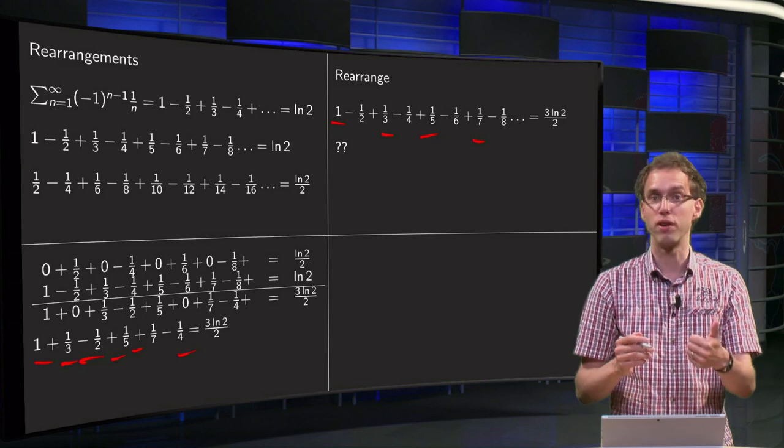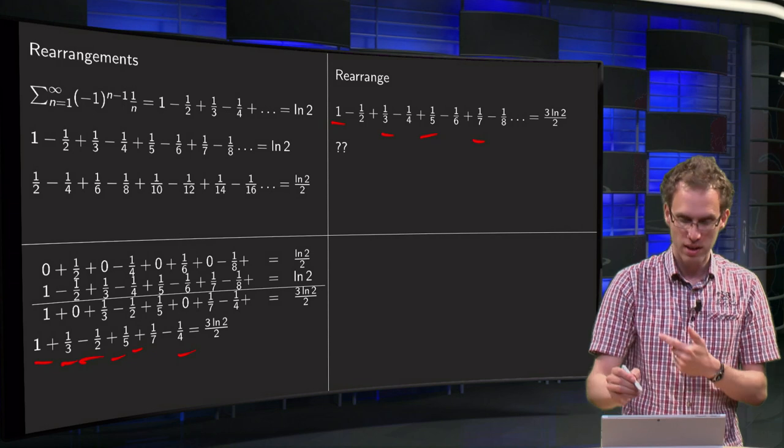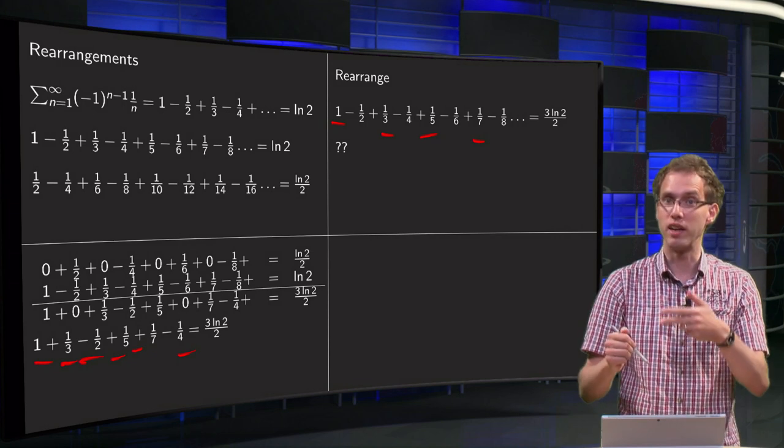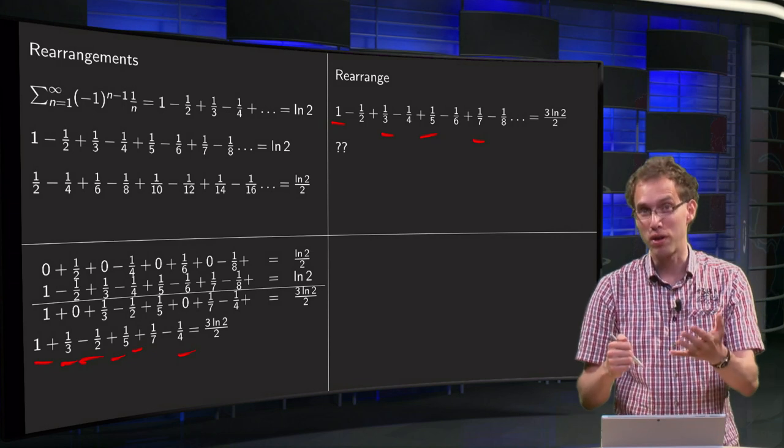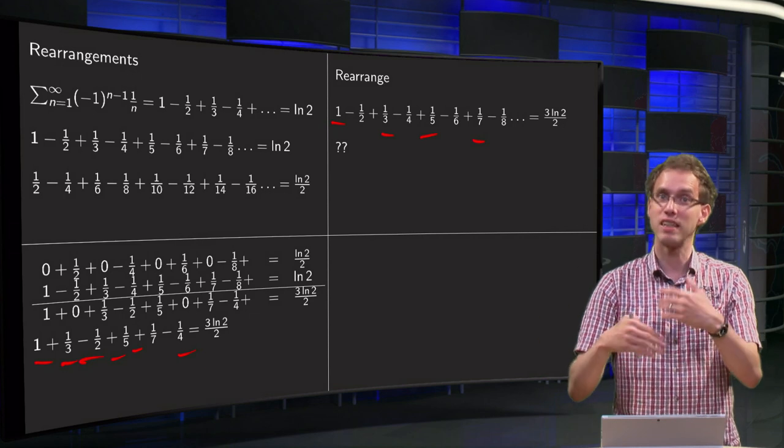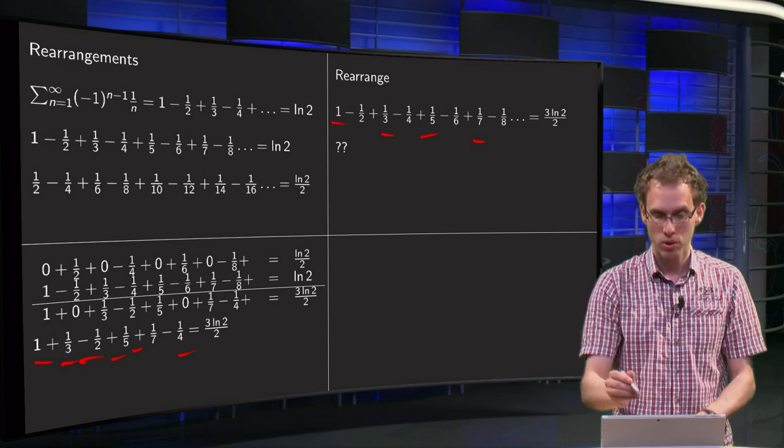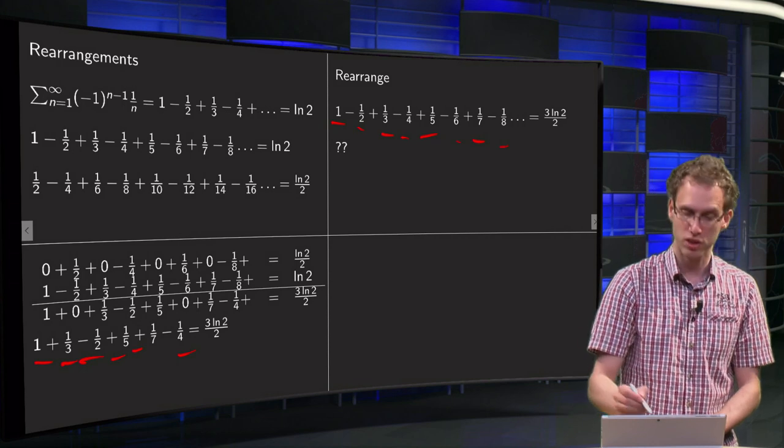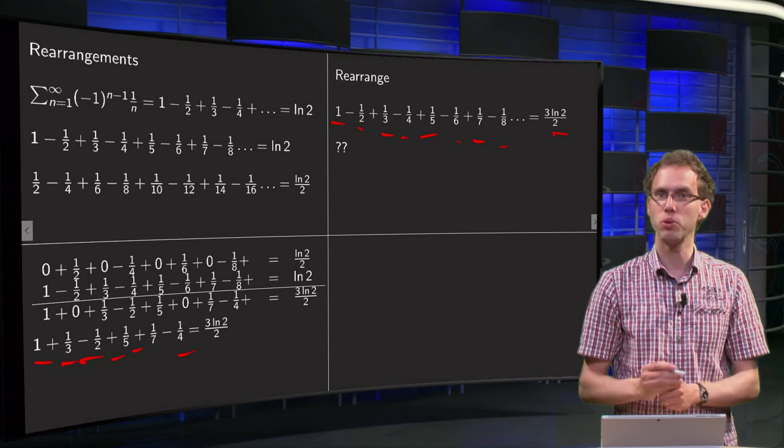And then the -1/6, and then the +1/13 + 1/15 - 1/8, etc. So I get all these terms over here. And which is still equal to (3/2)ln 2, right?